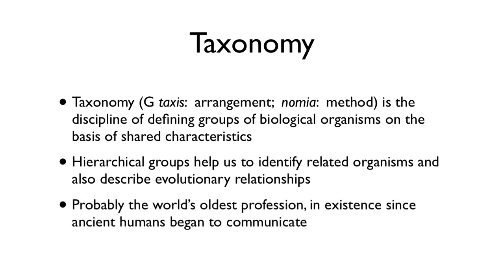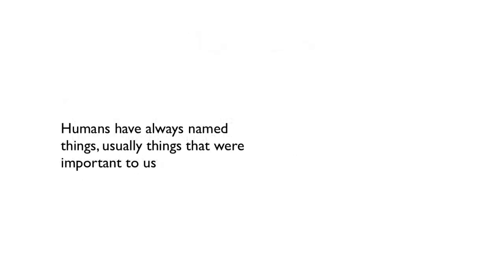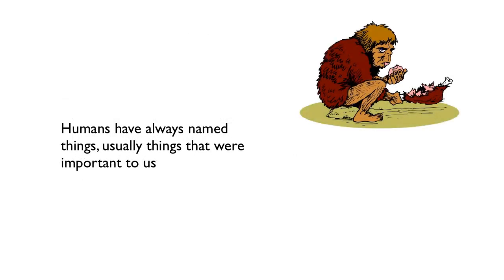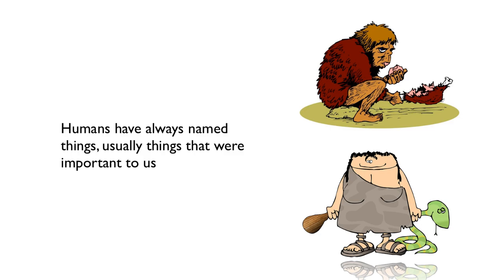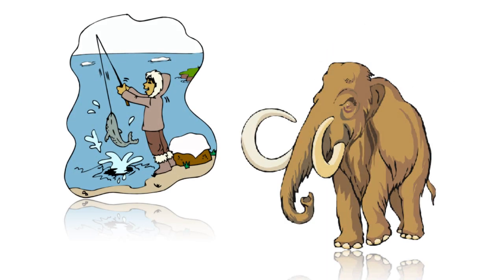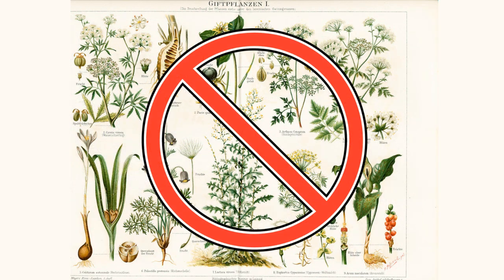Humans have been naming things since the very beginning, since we were first able to communicate. Certainly we named things that were important to us, like what to eat and things that we had to run away from — don't eat these poisonous plants, that kind of thing. And probably stayed at about that level for countless thousands of years. And then people started coming up with systems for organizing living things on earth.